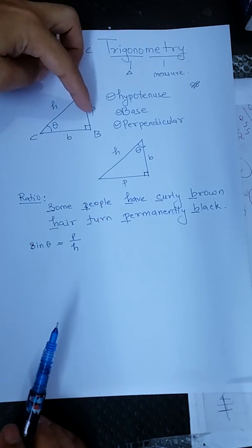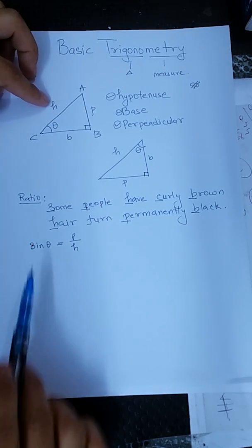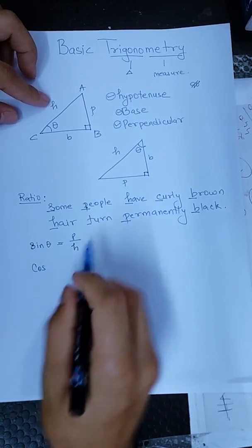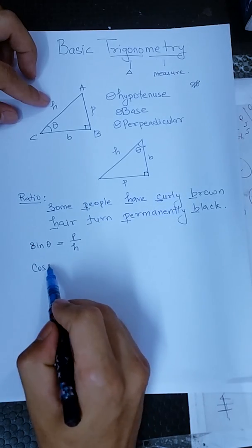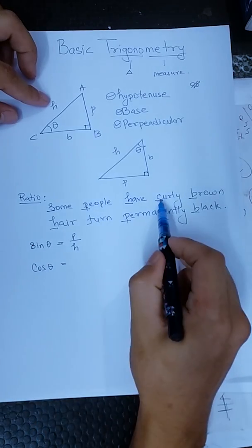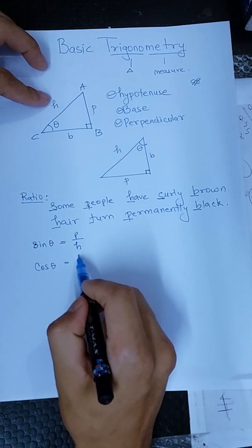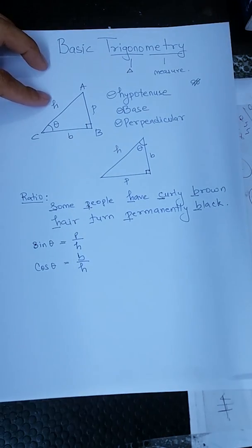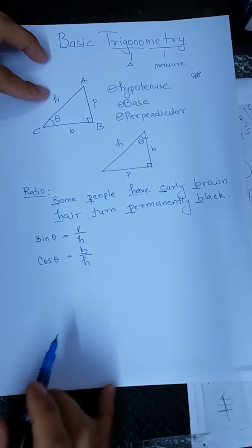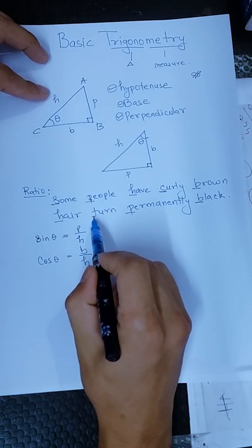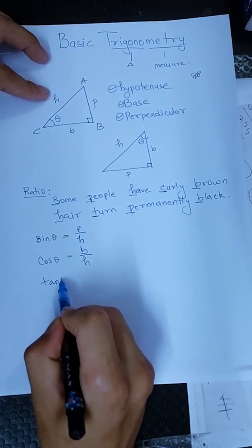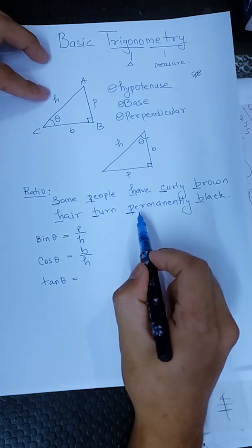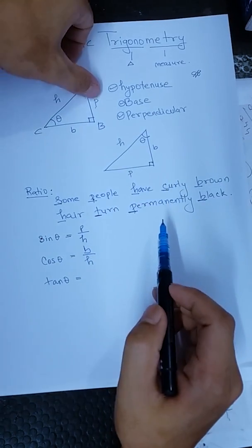Some people have — this is cos theta. Cos theta is curly brown hair — Brown divided by Hair — B by H. This is cos theta, which is permanently black.